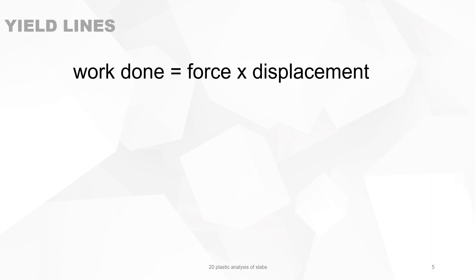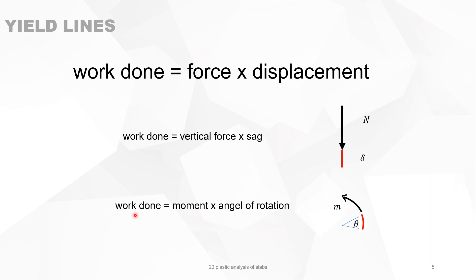Work done equals force times displacement. You can apply this on vertical force N and its displacement in the same direction as where the force is acting — then the work done equals the vertical force N times the deflection delta. You can also have work done with a bending moment, where the work done is the bending moment times the rotation angle theta. So the work done is M times theta.